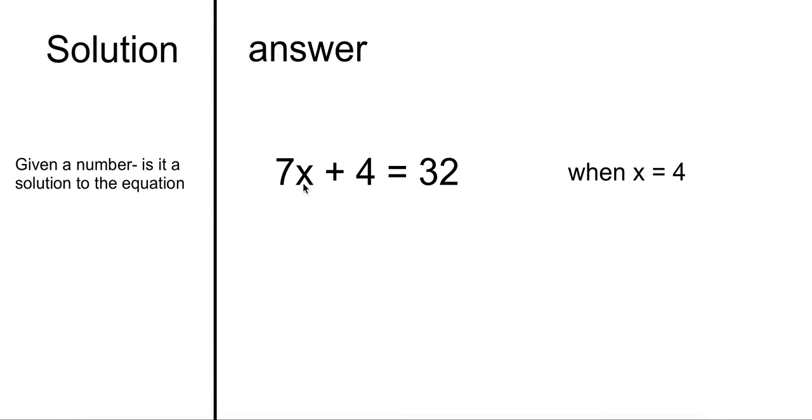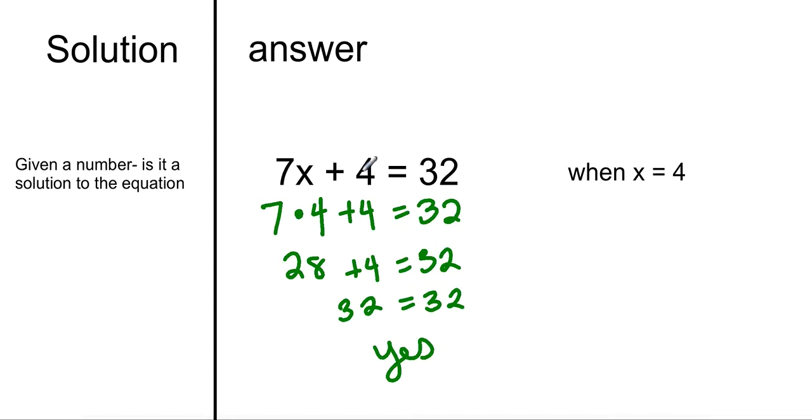So the first equation, 7x plus 4 equals 32. When you're given x, which is 4, is 4 a solution to this? Well let's plug it in and see. So 7 times 4 plus 4, does that give me 32? 7 times 4 is 28, plus 4 is that 32? Well 28 plus 4 is 32, so 32 equals 32, so yes. 4 is a solution to this equation.